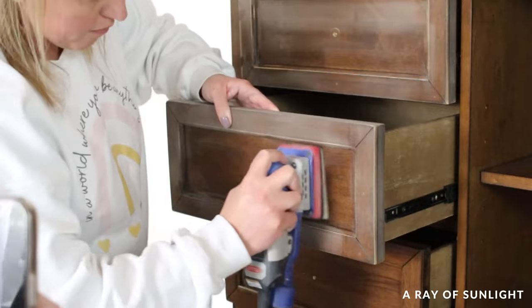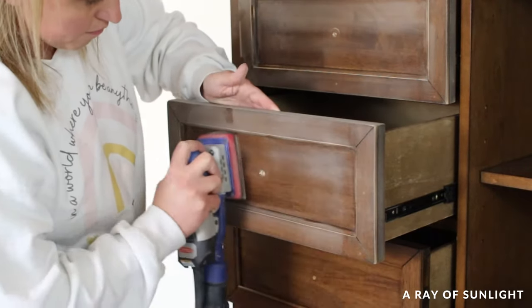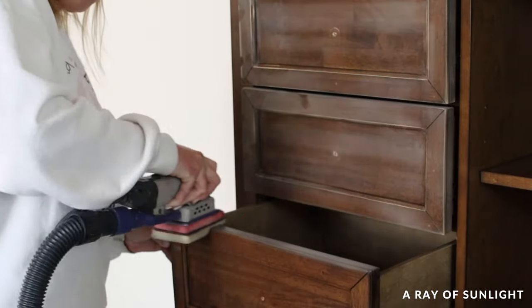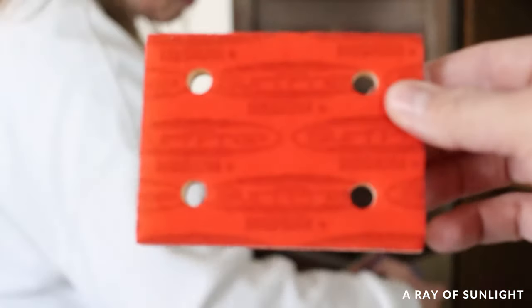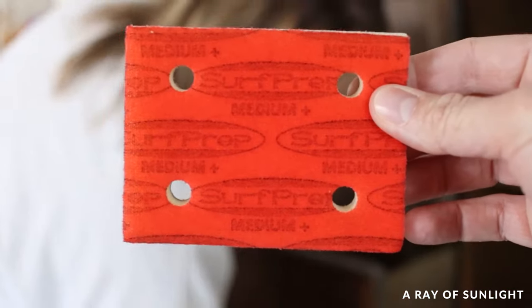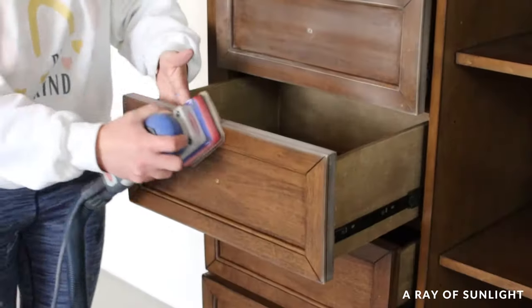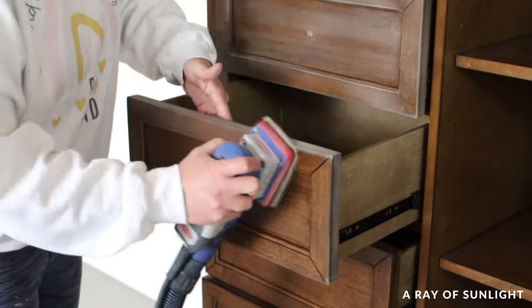And then she breezed through scuff sanding the armoire with my surf prep sander. She used the half inch foam sanding pads in medium grit for anything that wasn't flat, and then she just used regular 220 grit sandpaper for the flat areas.